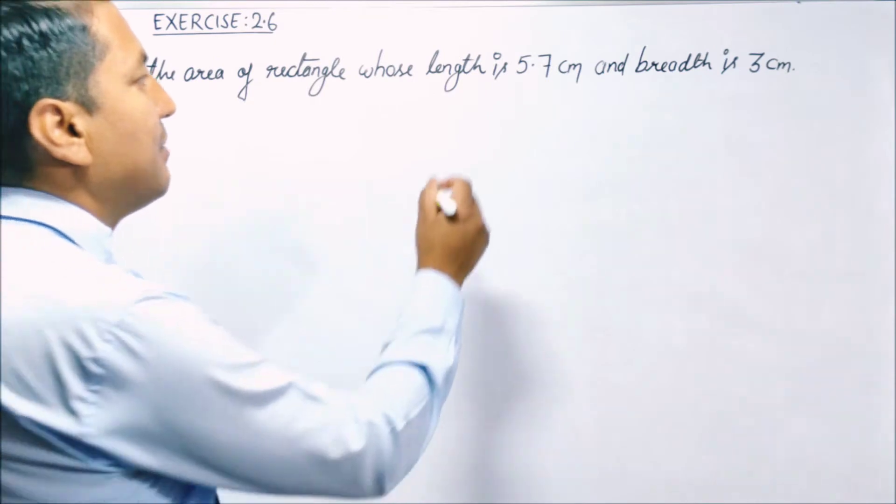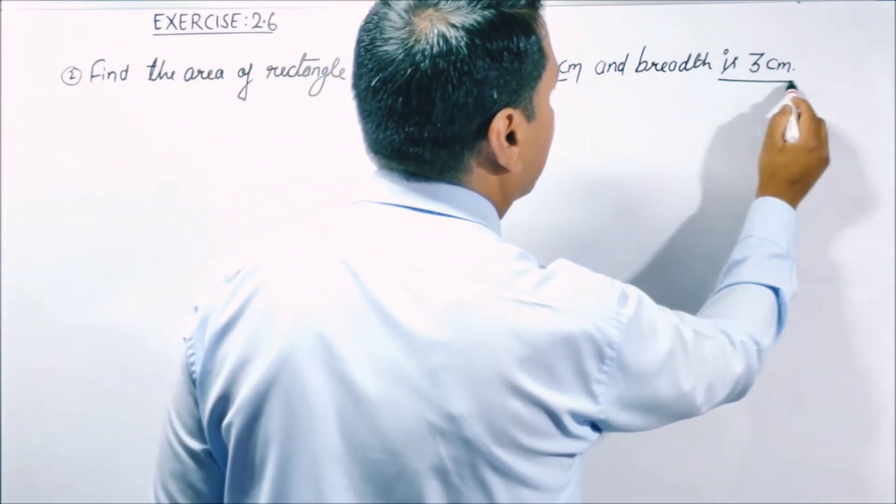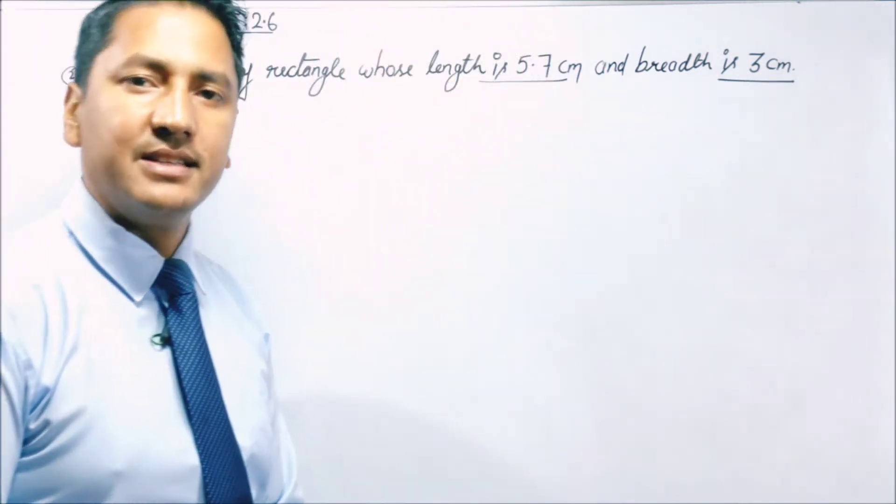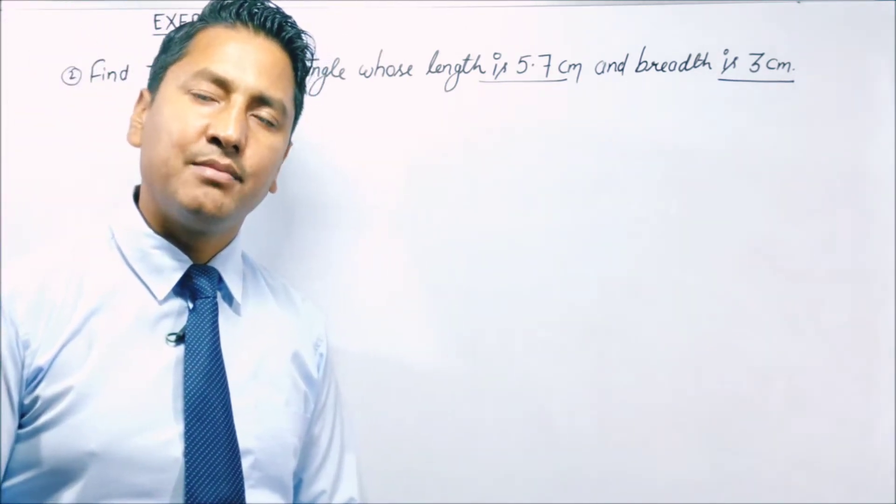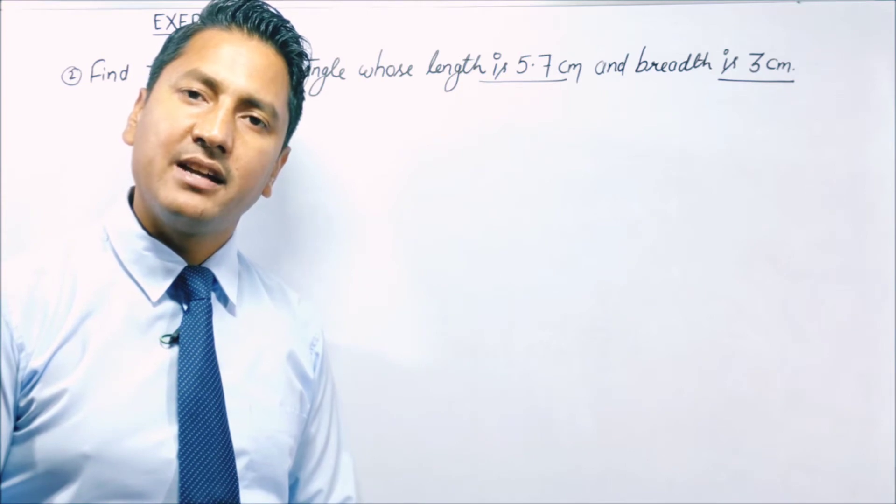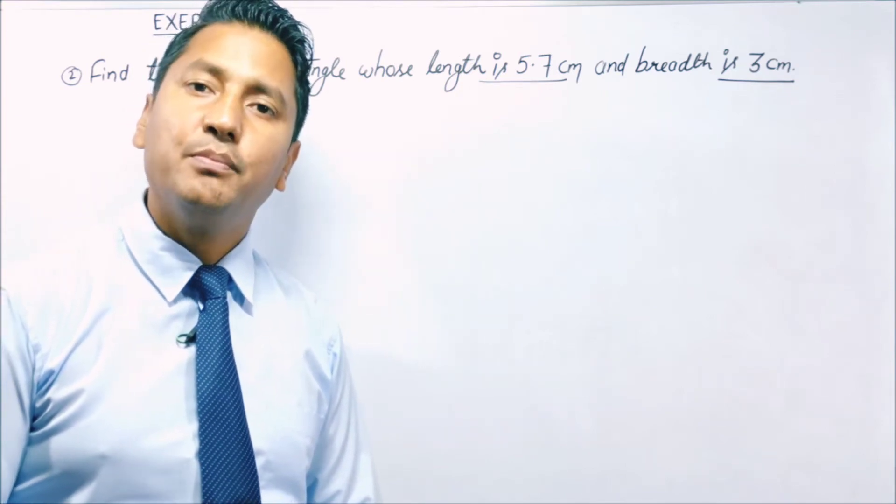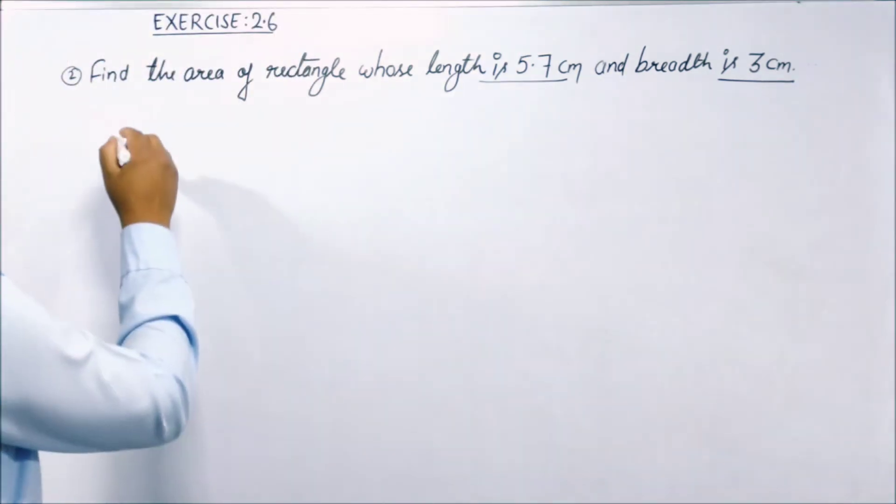तो आप देख रहे हैं कि हमें length दी है 5.7 centimeter और breadth भी हमें given है 3 centimeter. Area निकालते हैं बहुत ही simple. Area का formula याद है - area of rectangle equal to length into breadth. तो solution करते हैं.